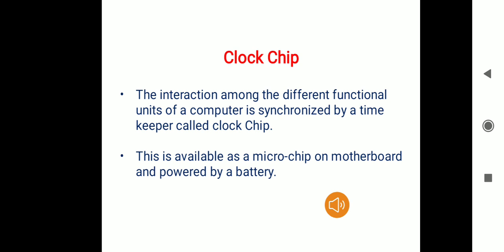The next topic is clock chip. So what is a clock chip and why do we need it? We know that there are different functional units of a computer such as the arithmetic logic unit, the control unit, etc. Now the interaction among these different functional units of a computer is synchronized, or we can say it's regulated, by a timekeeper called a clock chip.